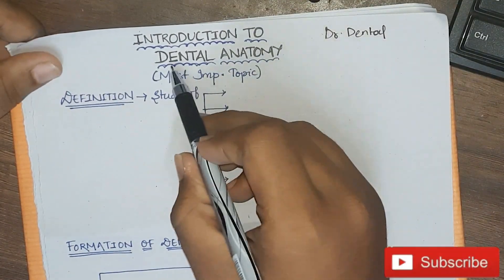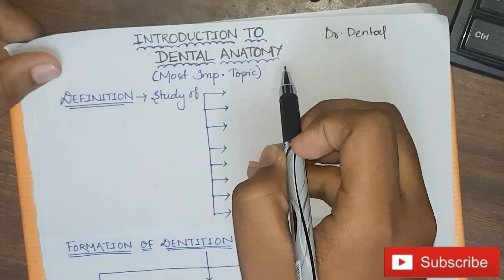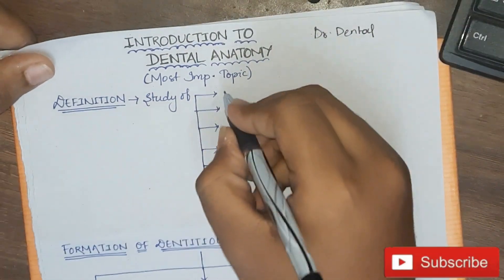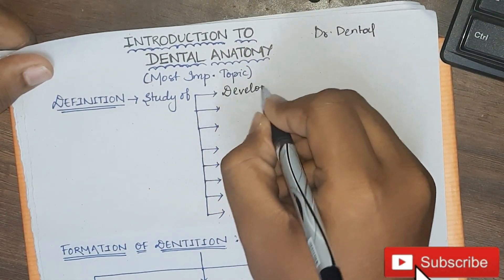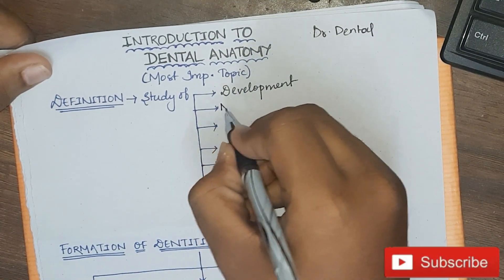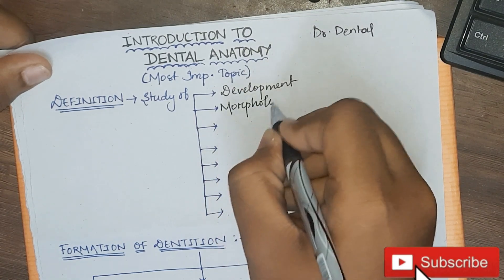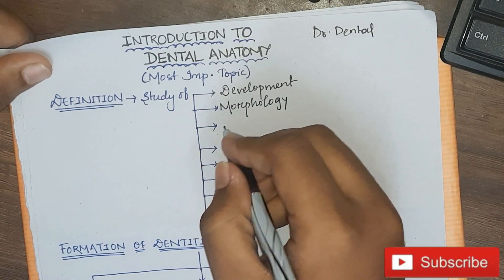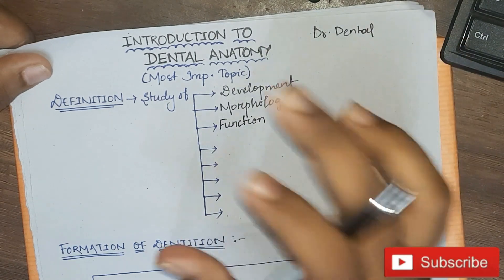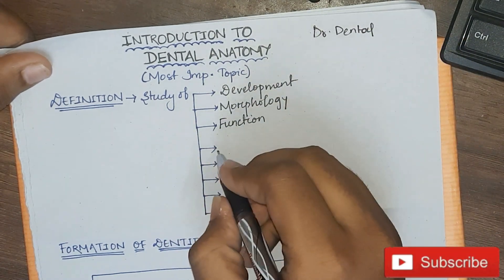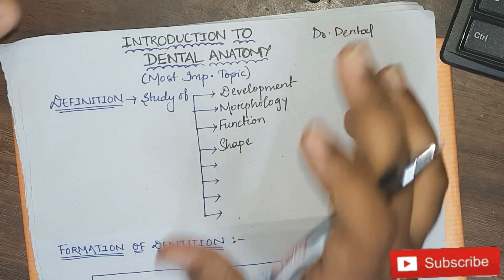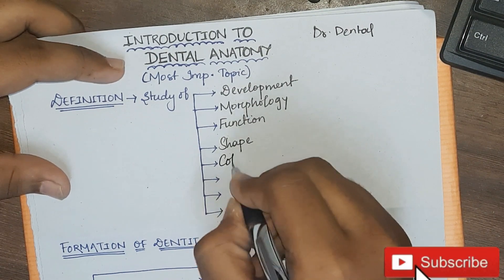Let's start this video. First, what is dental anatomy? The definition of dental anatomy is the study of the development — that is, how a tooth is formed — about the morphology of the tooth, what the morphology of the tooth is, and the function of various types of teeth present in the human dentition. We will also see the shape of each individual tooth present in the human dentition and the color of the tooth.